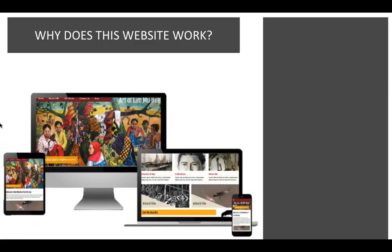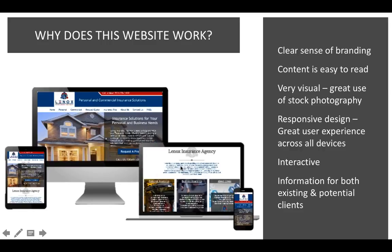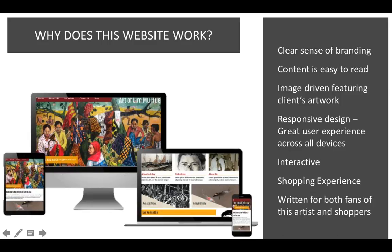This next one is an artist based out of California, and again it's a clear sense of branding. When you look at this website, you know exactly what the Art of Limb and Hue is all about. The content is easy to read. You've got all the different views showing up, and here you've got three different areas — each with an image first to get your attention, then the title in red: artwork of the day, collections, about me — with just a little bit of text, because the goal is not to throw everything about your business on the homepage. The goal is to get them to click. It's a responsive design, and it's a great use of the client's own artwork — image-driven and featuring the client's personal images in a really responsible way.